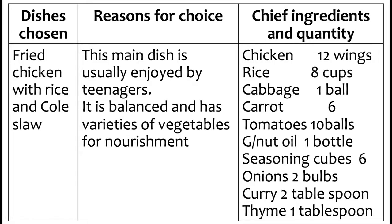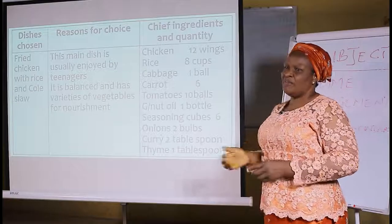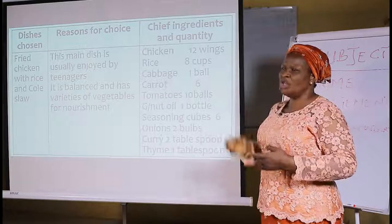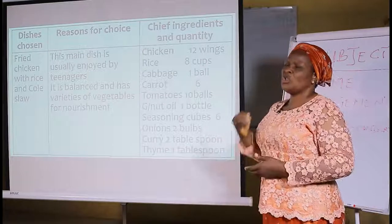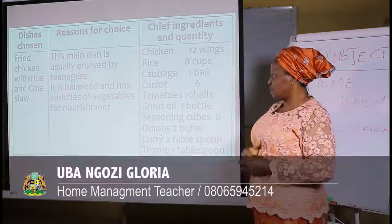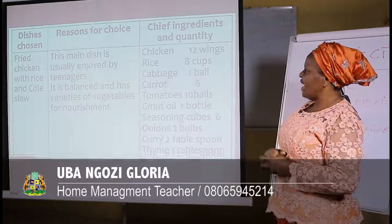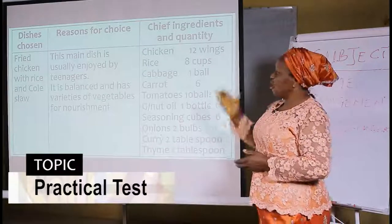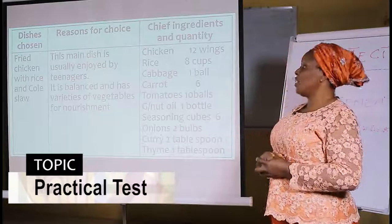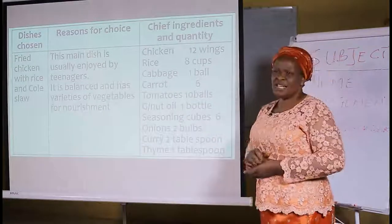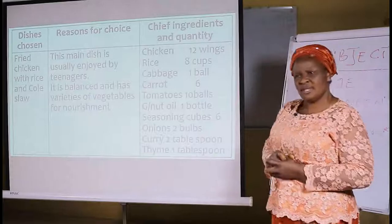It is a balanced dish and has varieties of vegetables for nourishment. They have exercised on the field and have worn and torn tissues which need to be nourished. So for part one, the dish is chosen. Number two, reasons for choice. And number three, the chief ingredients and their quantity.